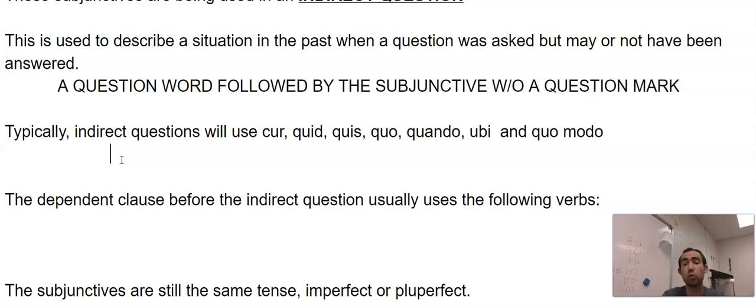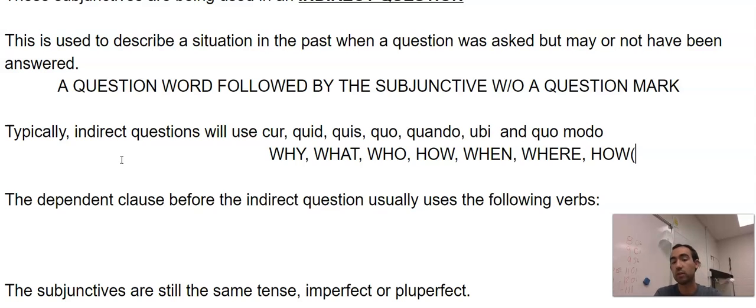Typically, indirect questions will use these question words to introduce the subjunctive: cur, which is why; quid, which is what; quis, who; quo, where or how; quando, ubi, quo modo, when, where, how, or in what way.